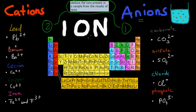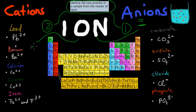They're both forms of ions. Ions are charged particles, so they're not neutral — they have a negative or positive charge. An anion is a negatively charged ion, whereas a cation is a positively charged ion. The ones you need to know for this video are carbonate, CO3 2-, so it has a negative charge, therefore it's an anion. You need to know about sulfate, SO4 2- — again 2-, so it has a negative charge, which means it's an anion.